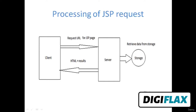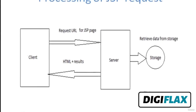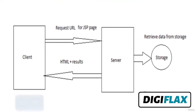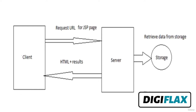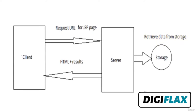Here we can see a figure which explains how a JSP request is handled by the server. When we write a URL into the web browser, the web browser sends it to the server — indicated by the arrow. Its name is 'Request URL for JSP page.' After getting the request, the server retrieves the data from storage. Data means the file which is requested by the client.